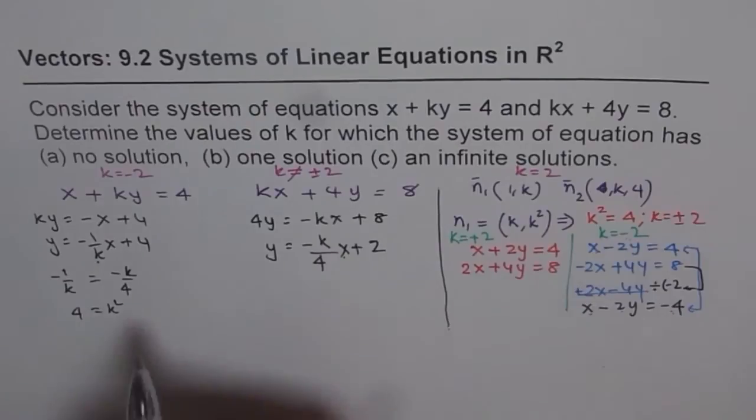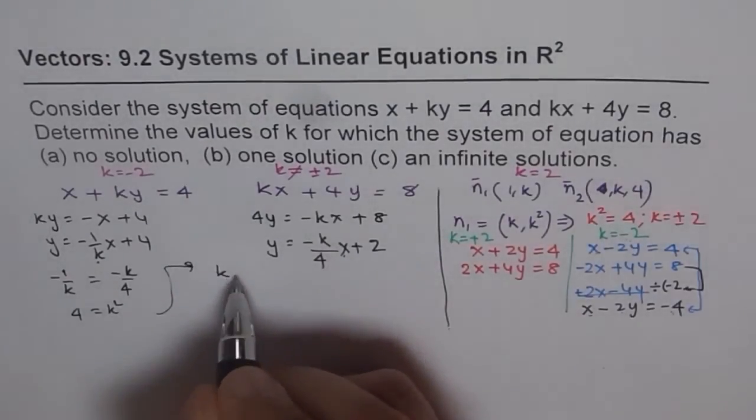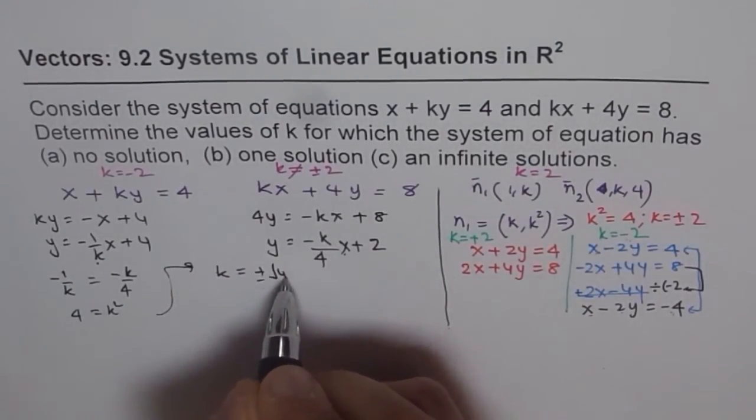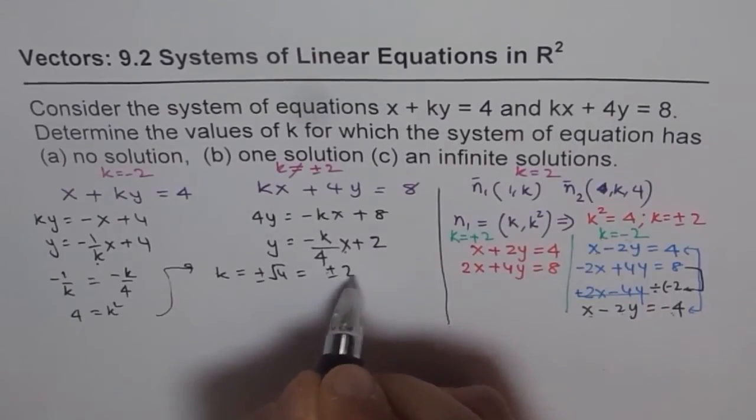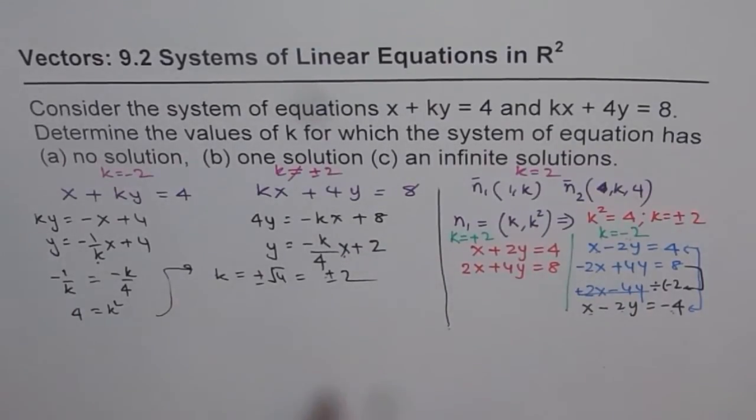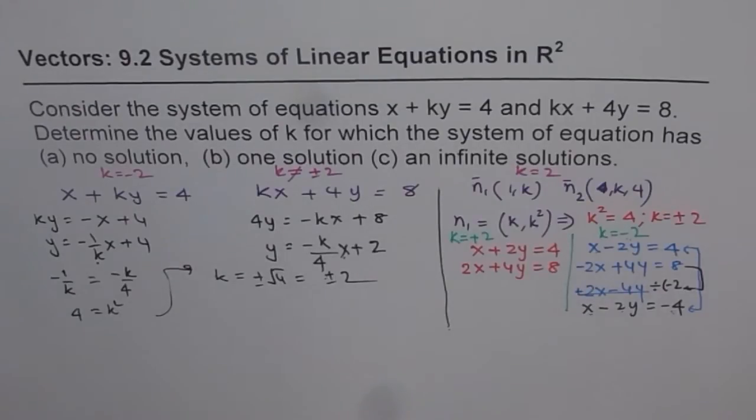So we get the same equation, that is, k equals plus minus square root of 4, which is plus minus 2. So even otherwise, if you adopt the general approach, which is writing your line in the form of slope-intercept form and equating same slope for the two, same slope means either no solution or infinite number of solutions.